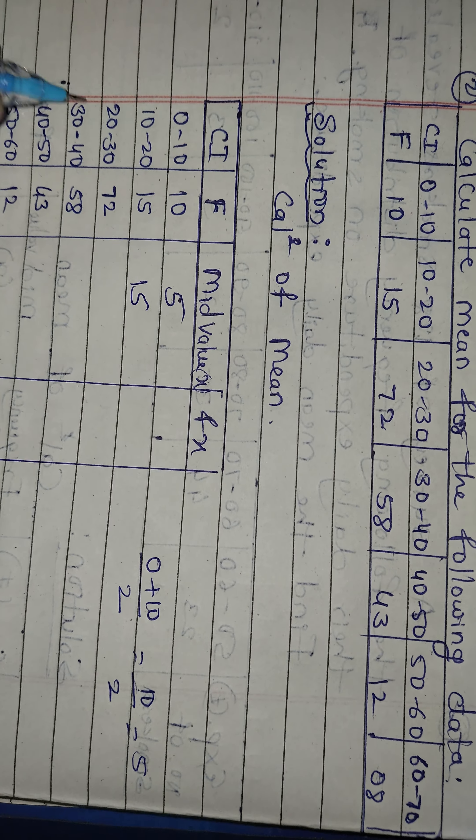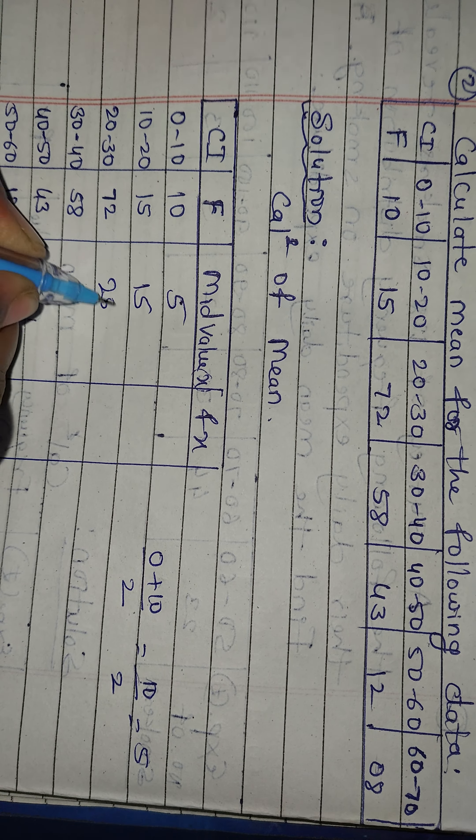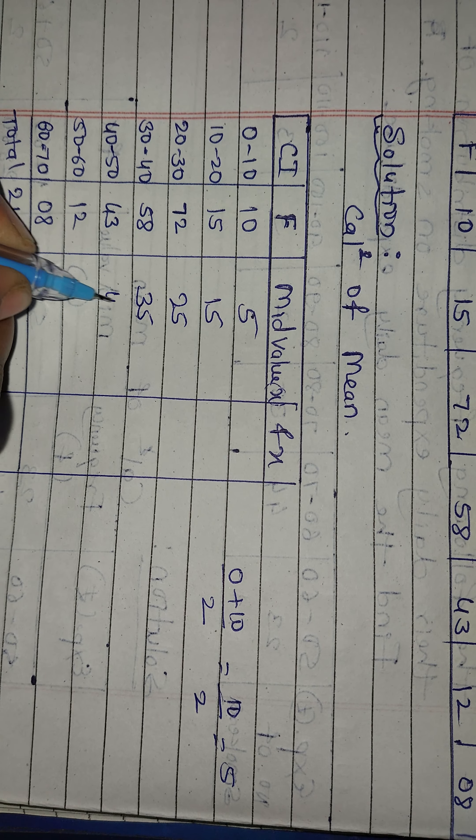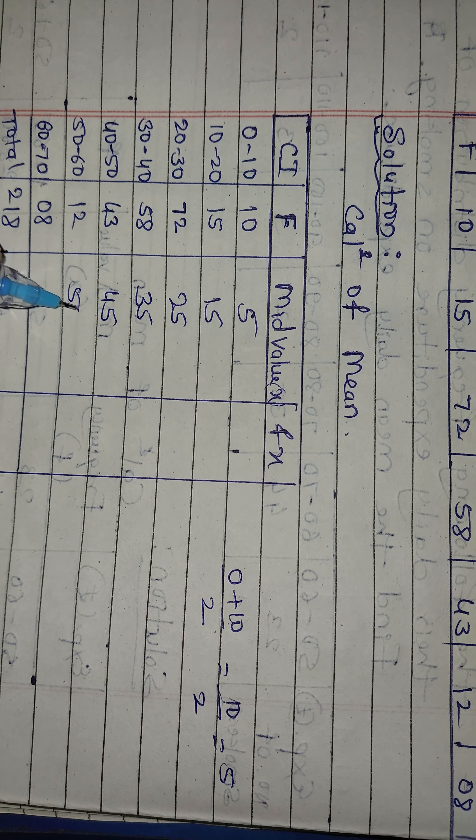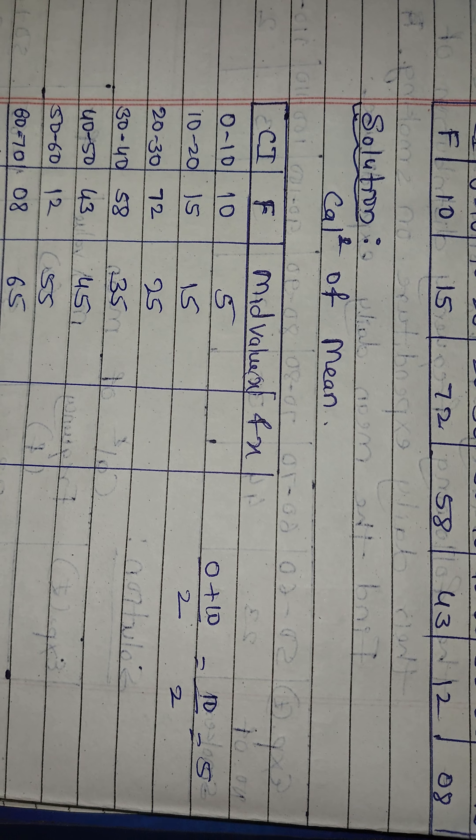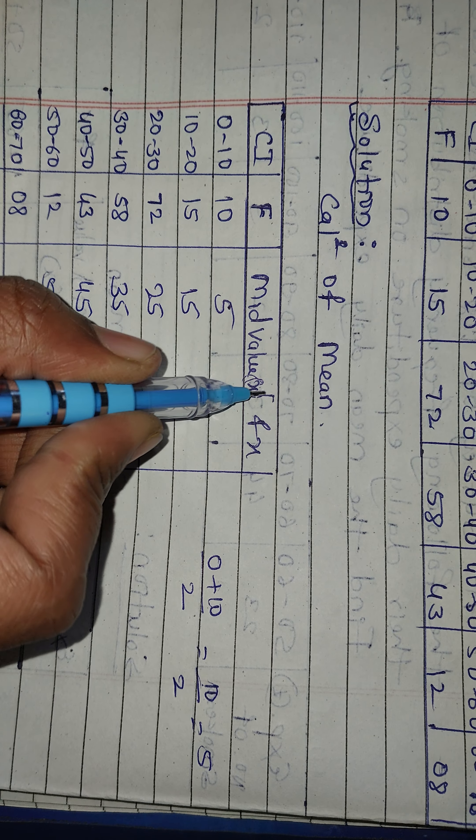10 to 20, the middle value is 15. 20 to 30, middle value is 25. 30 to 40, middle value is 35. Next: 45, 55, 65. This is the X column - middle values.